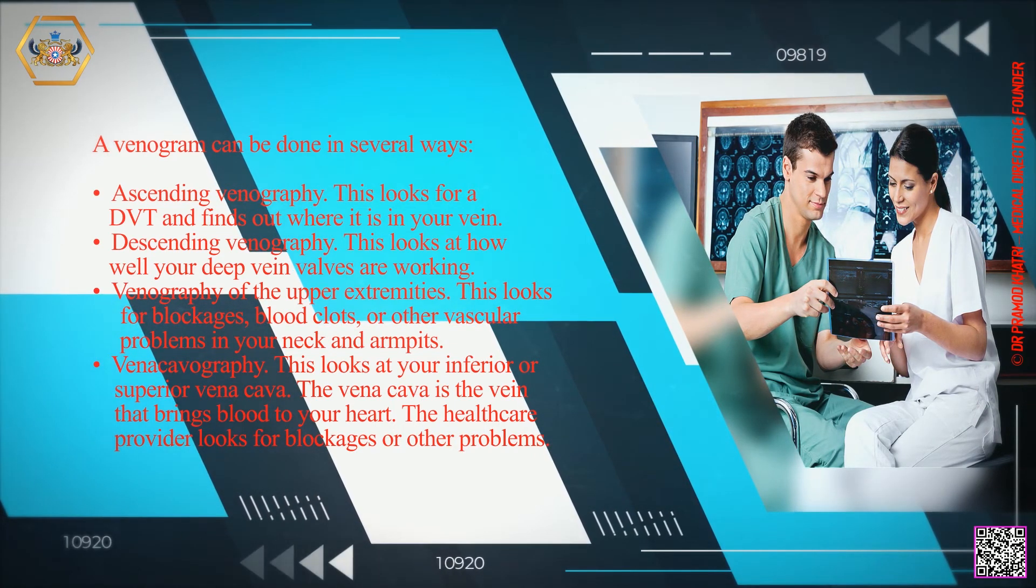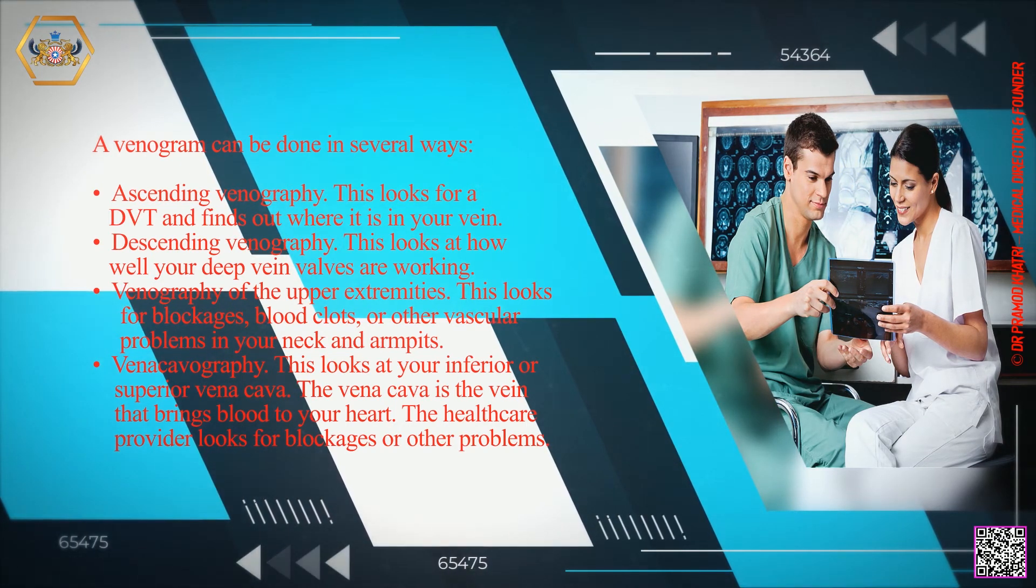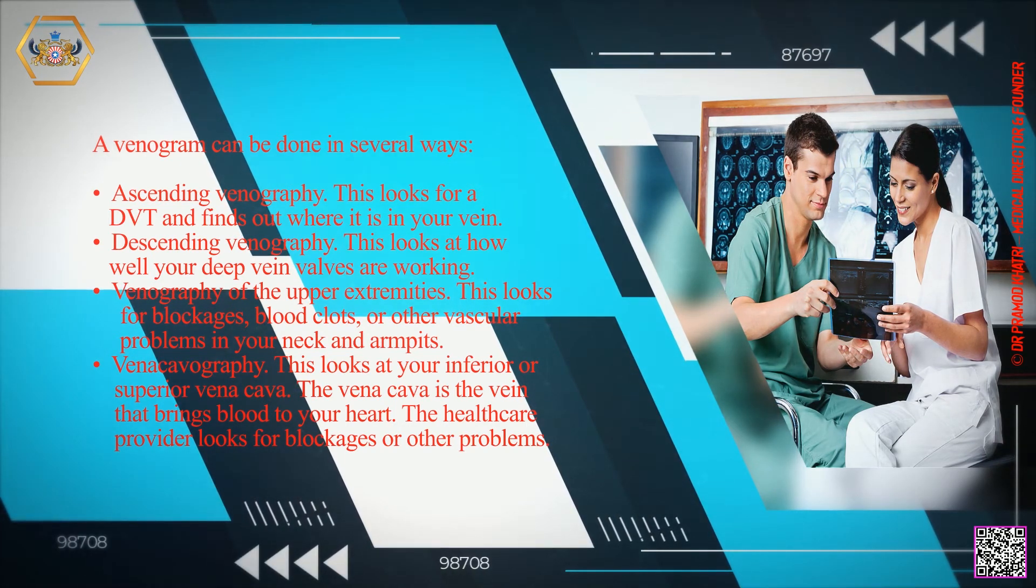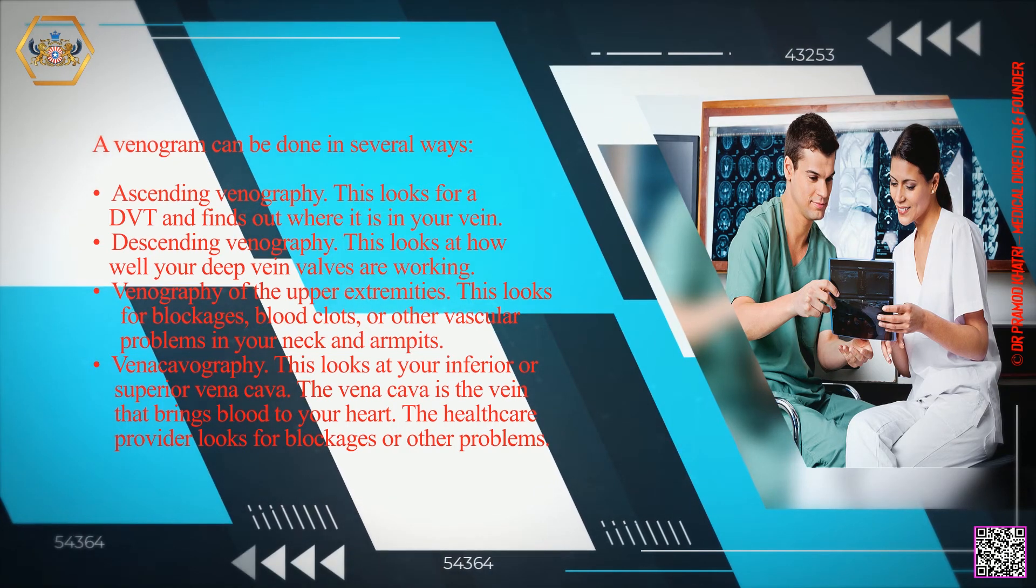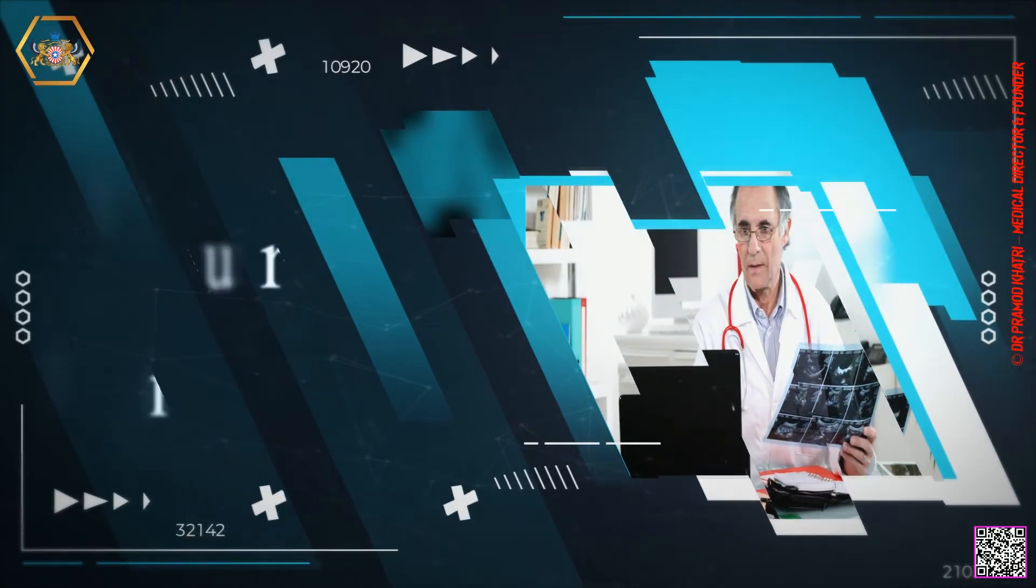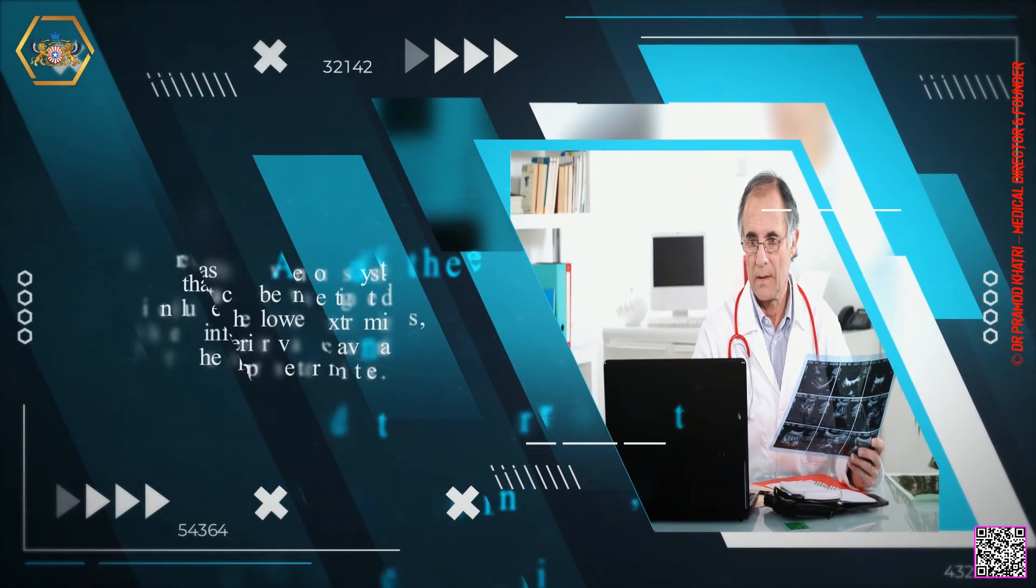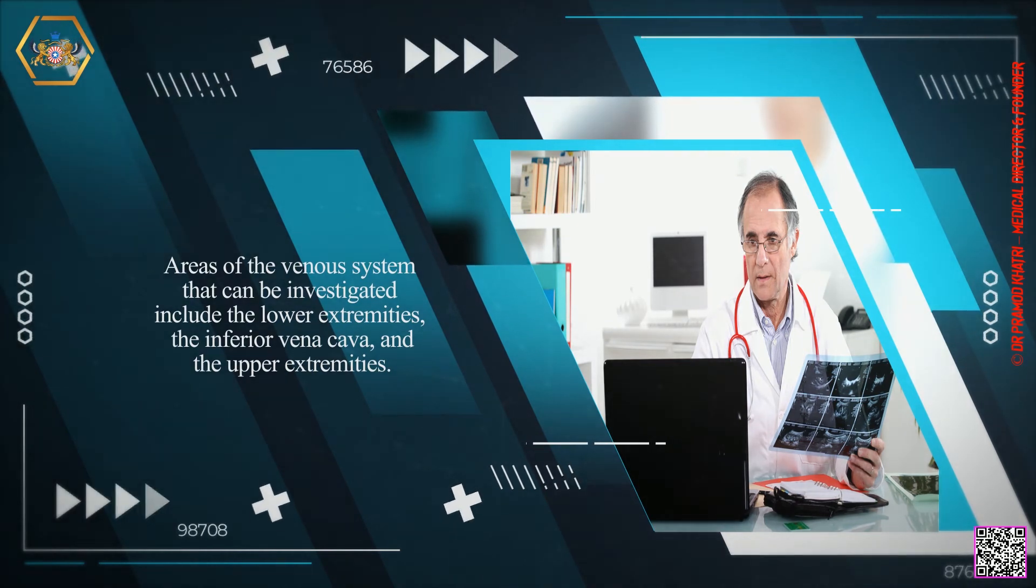Venacavography looks at your inferior or superior vena cava. The vena cava is the vein that brings blood to your heart. The health care provider looks for blockages or other problems. Areas of the venous system that can be investigated include the lower extremities, the inferior vena cava, and the upper extremities.